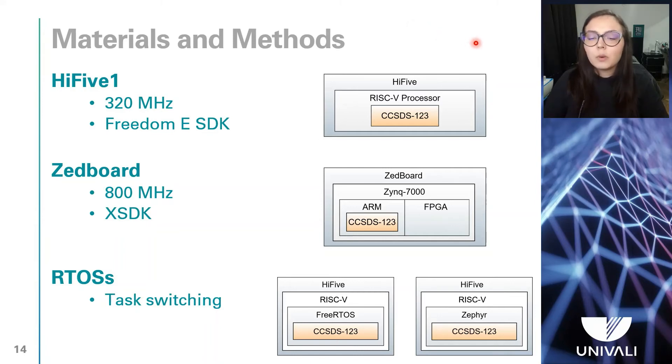The compressor was executed as bare metal code on two development kits, the SiFive HiFive1 for RISC-V and Zedboard development kit for ARM. The HiFive1 kit has a Freedom E310,